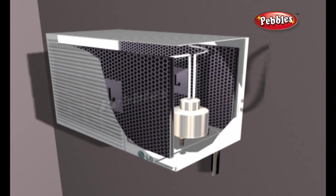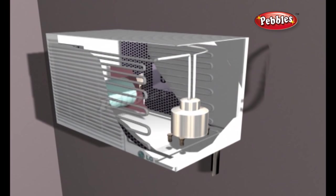When the unit is running, the circulating fan and compressor are running simultaneously. The fan motor has two fan blades attached to it on either end.